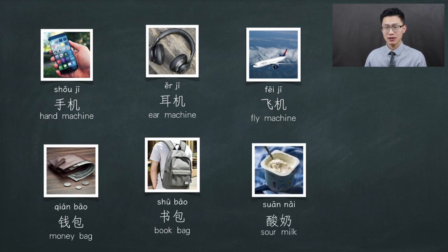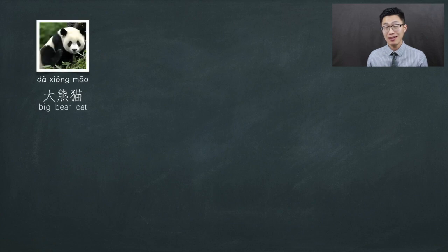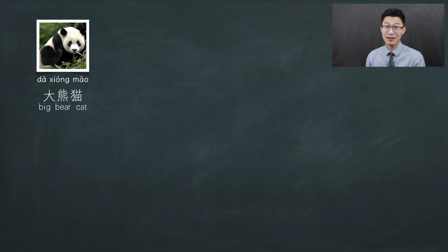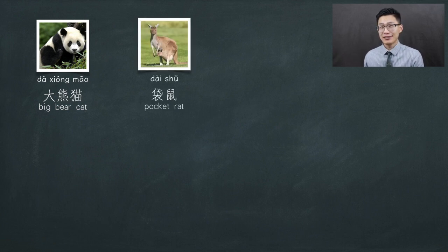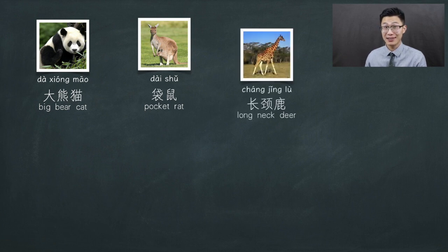How about yogurt? What's it made from? From milk — and it's a sour milk. So yes, suan nai for yogurt. And how about a lovely big bear cat? Yes, da xiong mao for panda — it means big bear cat. How about the lovely pocket rat in Australia? Dai shu — pocket rat. And long neck deer? Chang jing lu, in Africa — that's giraffe.